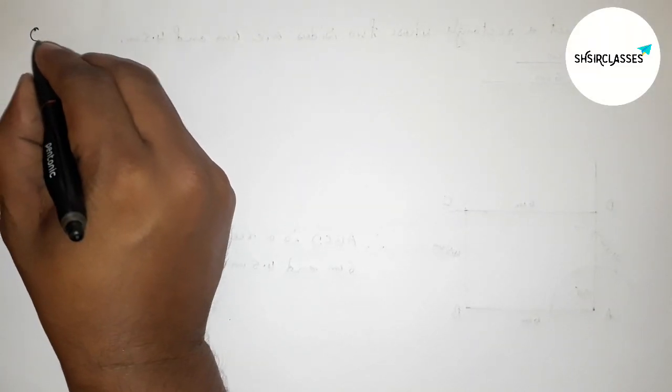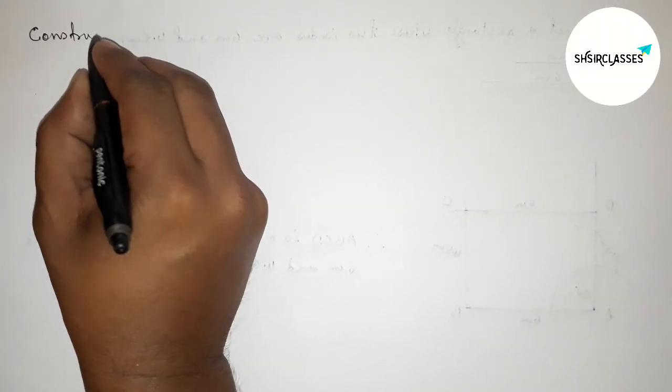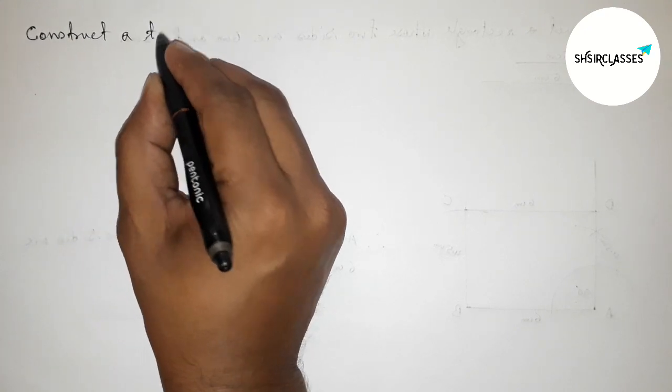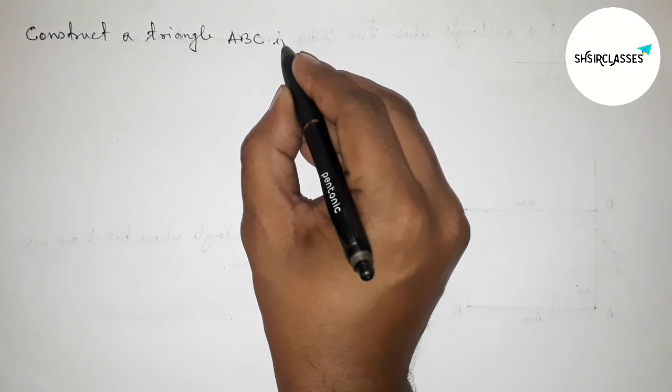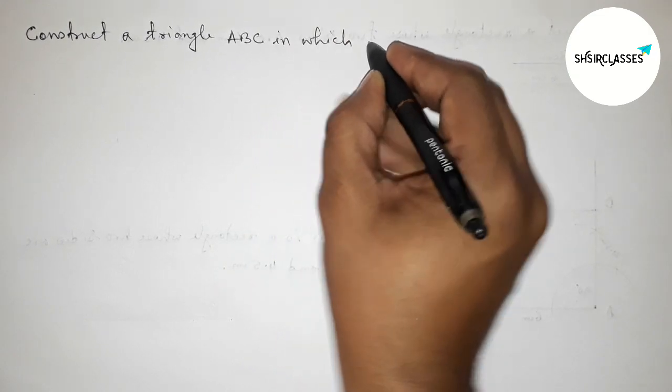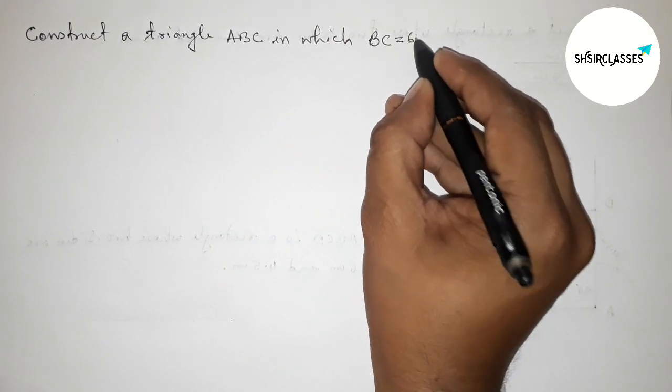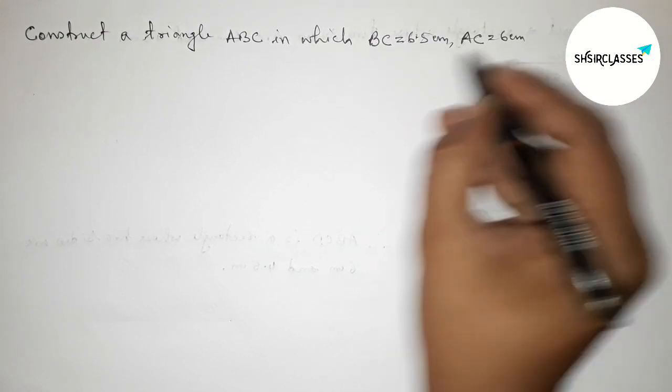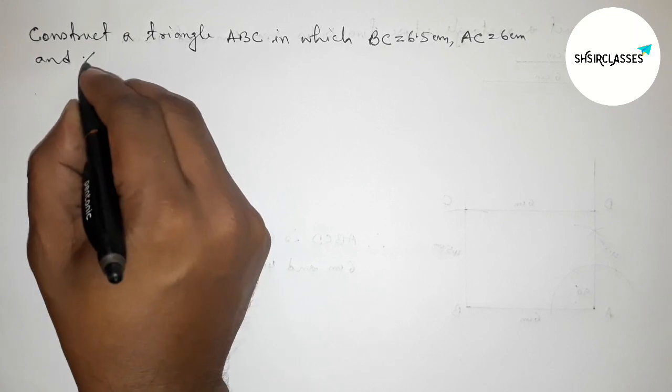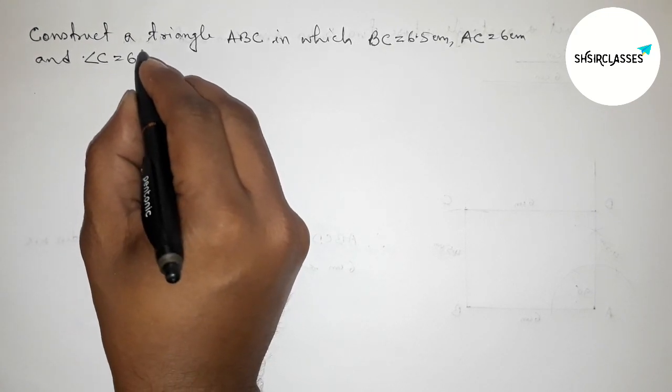Hi everyone, welcome to SI Share Classes. Today in this video we have to construct a triangle ABC in which BC equals 6.5 centimeters, AC equals 6 centimeters, and angle C equals 60 degrees. So please watch the video till the end.